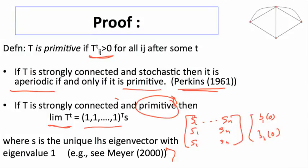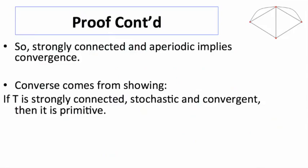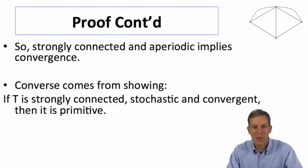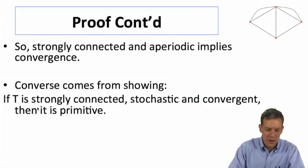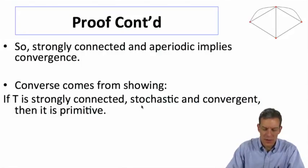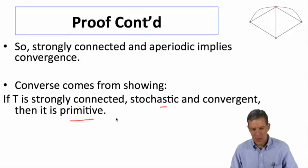So what this does is say, if you've got aperiodicity, that's equivalent to primitive in this setting, and then primitive gives you the left-hand side eigenvector as the convergence. So strongly connected and aperiodic implies convergence, and the converse is going to come from showing that if we've got T being strongly connected, stochastic, and convergent, then it's got to be primitive.